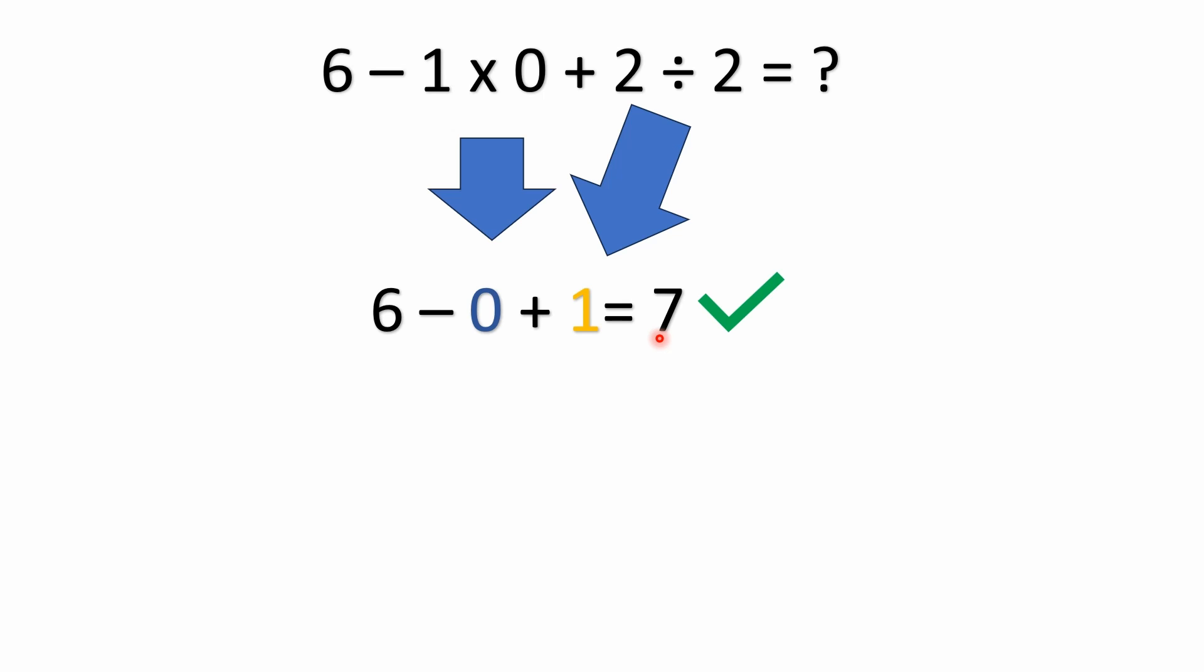Now I've seen a lot of people work these things out incorrectly. What they'll do is take 6 minus 1 and get 5, and then 5 times 0 is 0, and so on. But that's incorrect. What they're doing is they're solving left to right. You've got to do the multiplication and division first.